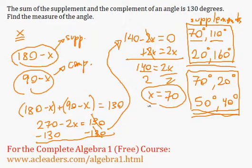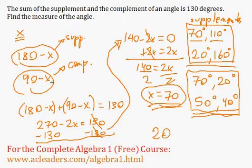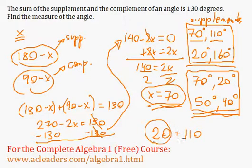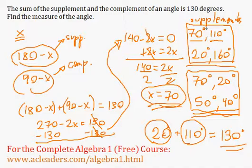That is the measure of the angle we were looking for. Let's confirm it: the complement of 70 is 20, because 90 minus 70 is 20, and the supplement of 70 is 110. Adding the complement and the supplement gives 20 plus 110, which is 130 degrees. It was a complete fluke that I picked 70 to explain supplements and complements!